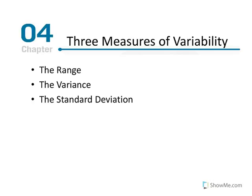There are three measures of variability: the range, which is simply the span of scores; the variance, which is the average of squared deviations; and the standard deviation, which represents the actual average difference between scores and the mean of a distribution.